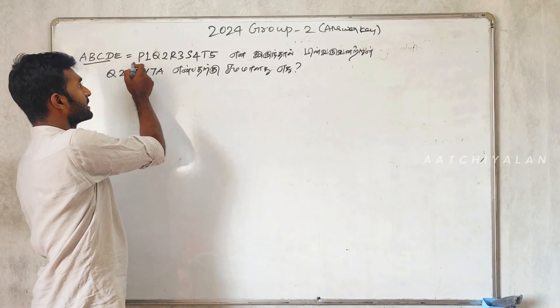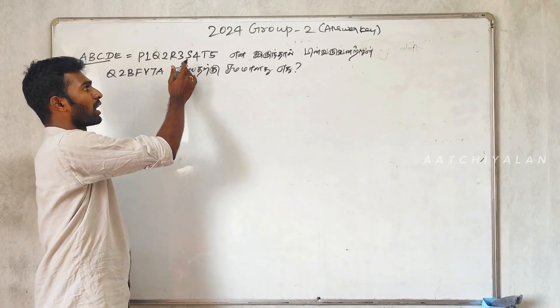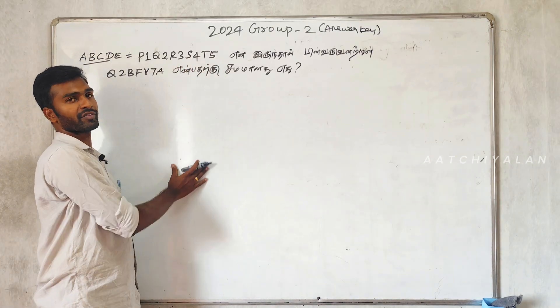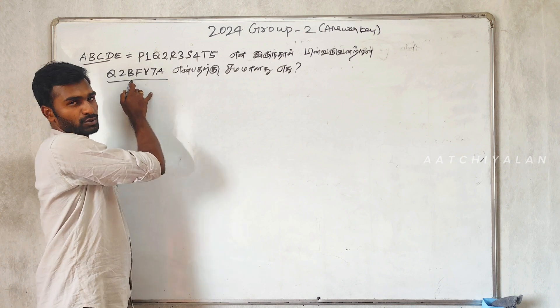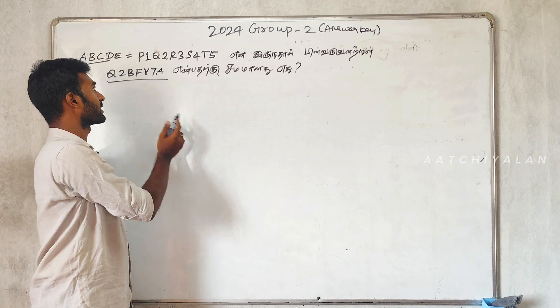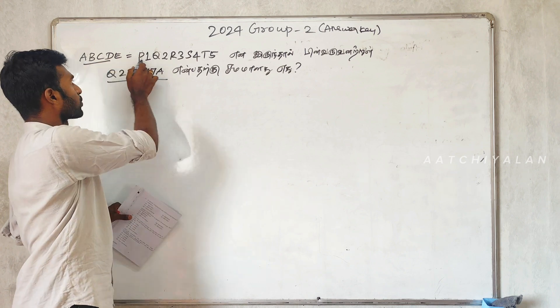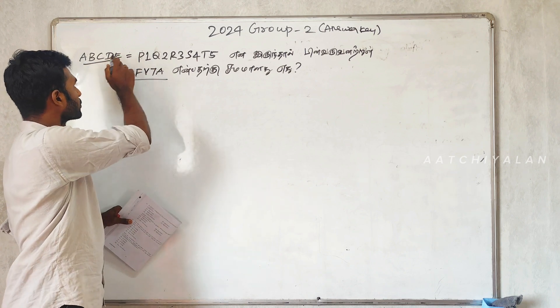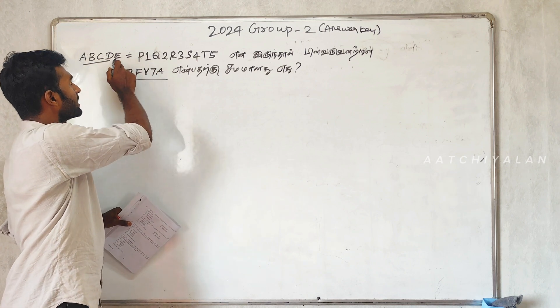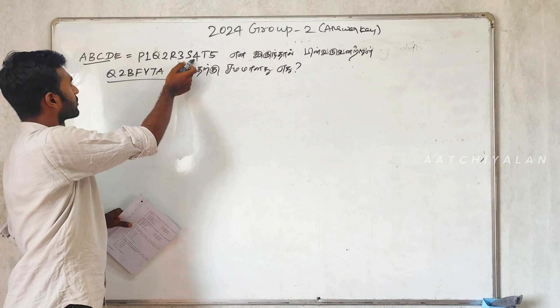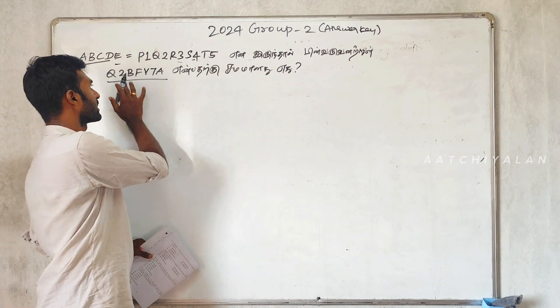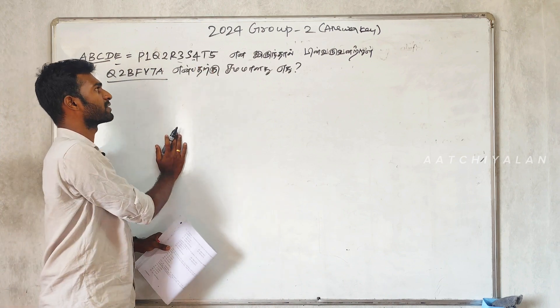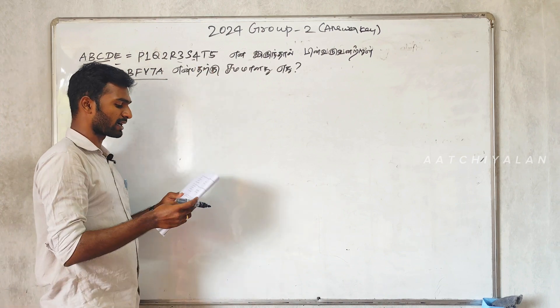We have a series: A1, B2, C3, D4, E5 — P1, Q2, R3, S4, T5. So Q2, V7, A. That's why Q2, B, F, V7.